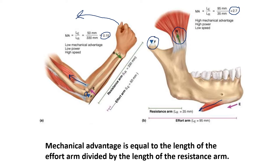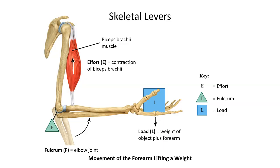Looking more closely at the biceps: muscles can only generate force when they contract — they never push, they always pull. The biceps create tension and pull on the radius very close to the fulcrum. The load is held in the hand, and its weight pulls down. Because the effort is applied very close to the fulcrum and the load is on the same side as the effort, we don't have any mechanical advantage. But that muscle doesn't have to shrink very much to create a rather large movement at the hand.